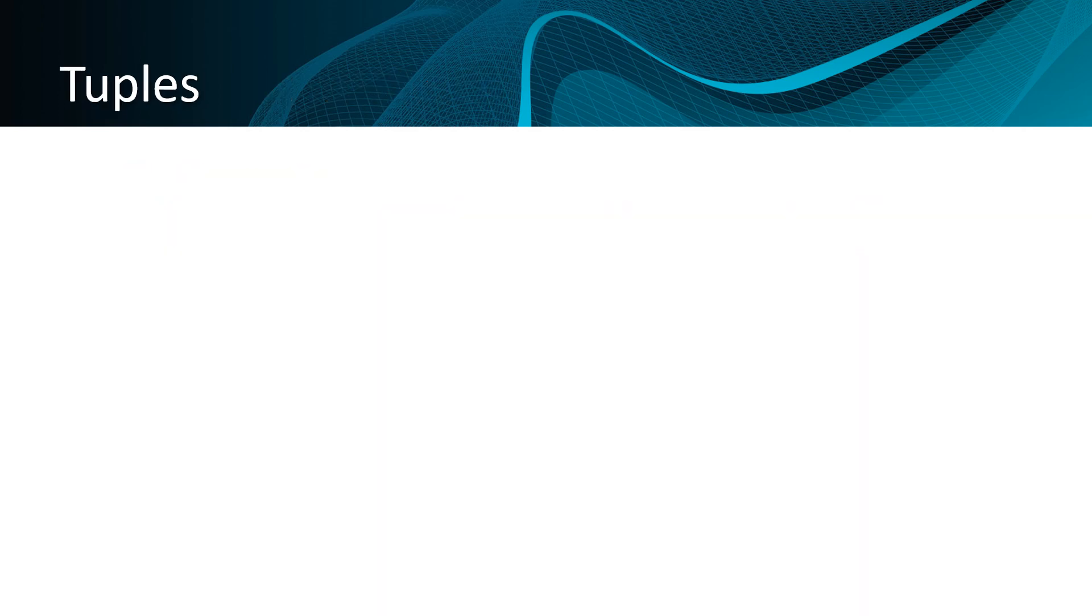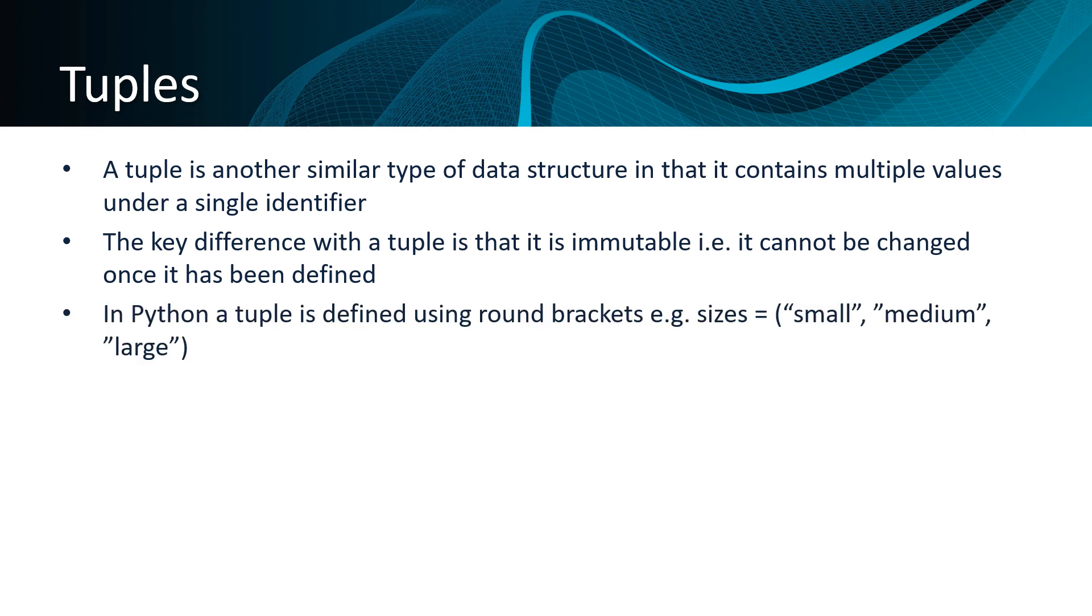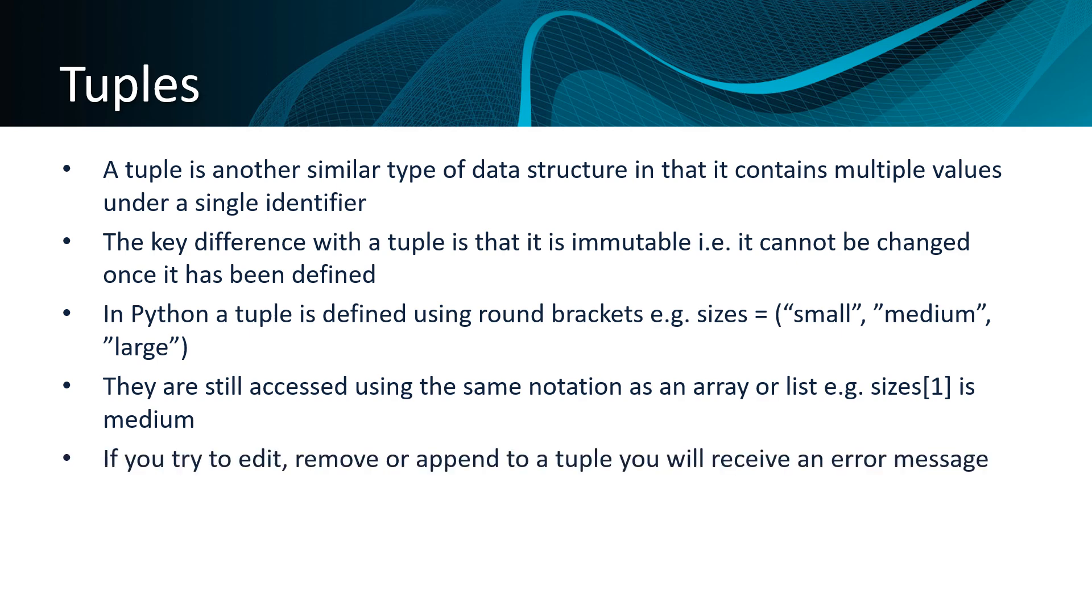A tuple is another similar type of data structure to a list or array in that it contains multiple values under a single identifier. The key difference with a tuple is that it is immutable. This means it cannot be changed once it has been defined. In Python, a tuple is defined using round brackets instead of square brackets. They are accessed using the same notation as an array or list. For instance, sizes[1] would refer to the item in position 1 in the tuple above, which is medium. If you try to edit, remove, or append items to a tuple, you will receive an error message because you can't do that with tuples.